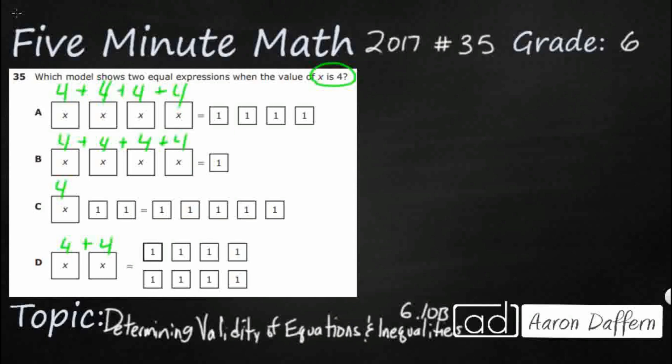So let's take a look at A. We've got 4 and 4 and 4 and 4 and 4, so that's going to be 16. And over here on the right side, we've just got 1 plus 1 plus 1 plus 1, so it's 16 equals 4. That is not going to work.